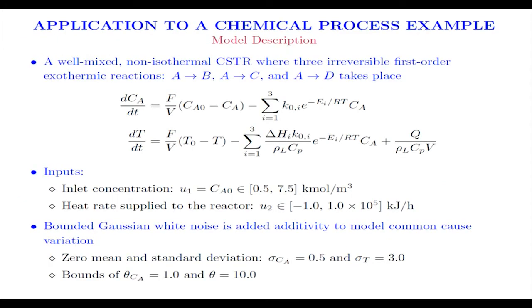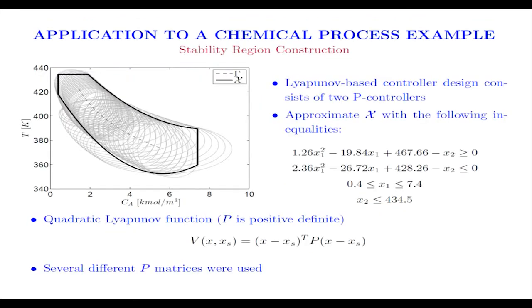Let's apply this to a chemical process example to show how it performs. Consider a well-mixed non-isothermal CSTR where three first-order exothermic reactions take place. For this process, we have two inputs: the inlet concentration and the heat supplied to the reactor. To assess the stability properties, we'll add some bounded Gaussian white noise to the process to model the process disturbances. First step is to construct this set X. Considering many Lyapunov function candidates, they're all quadratic. We compute this for various P matrix in the Lyapunov function. We can compute many stability regions, these omega rho sets. And then with this, we can compute X. We approximate it through a series of quadratic and linear inequality constraints. That's how we'll impose the state be maintained in X in our EMPC.